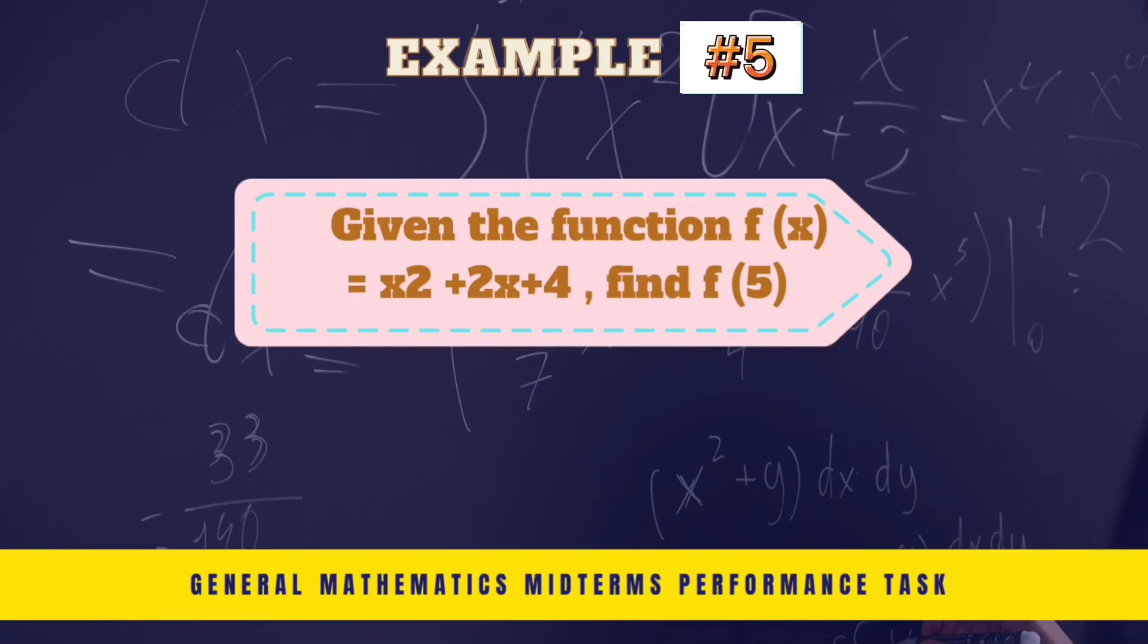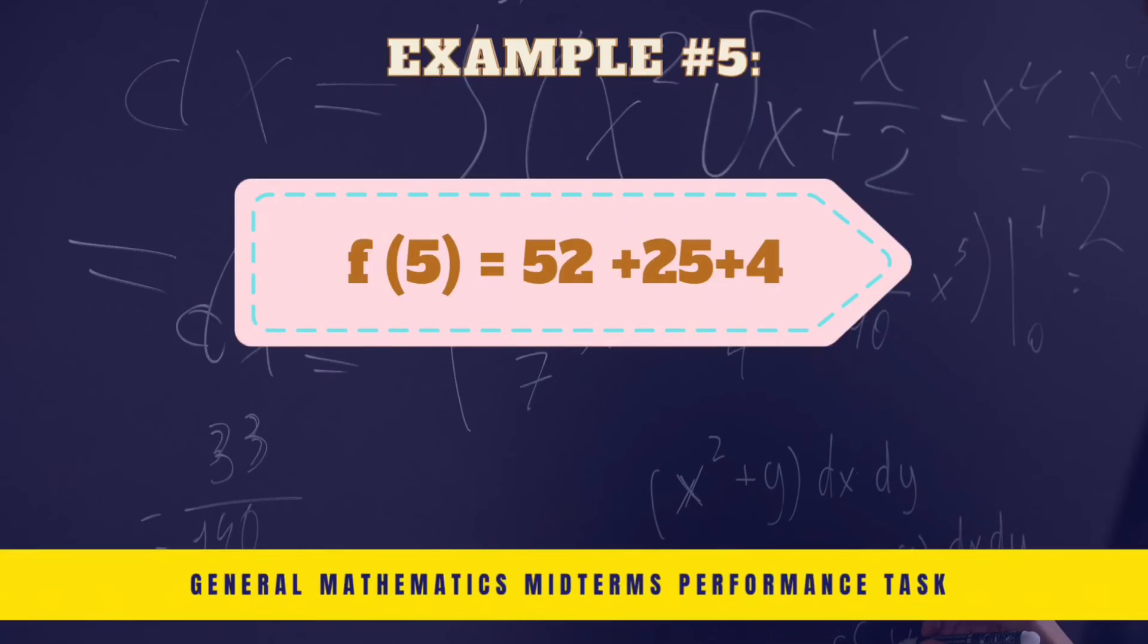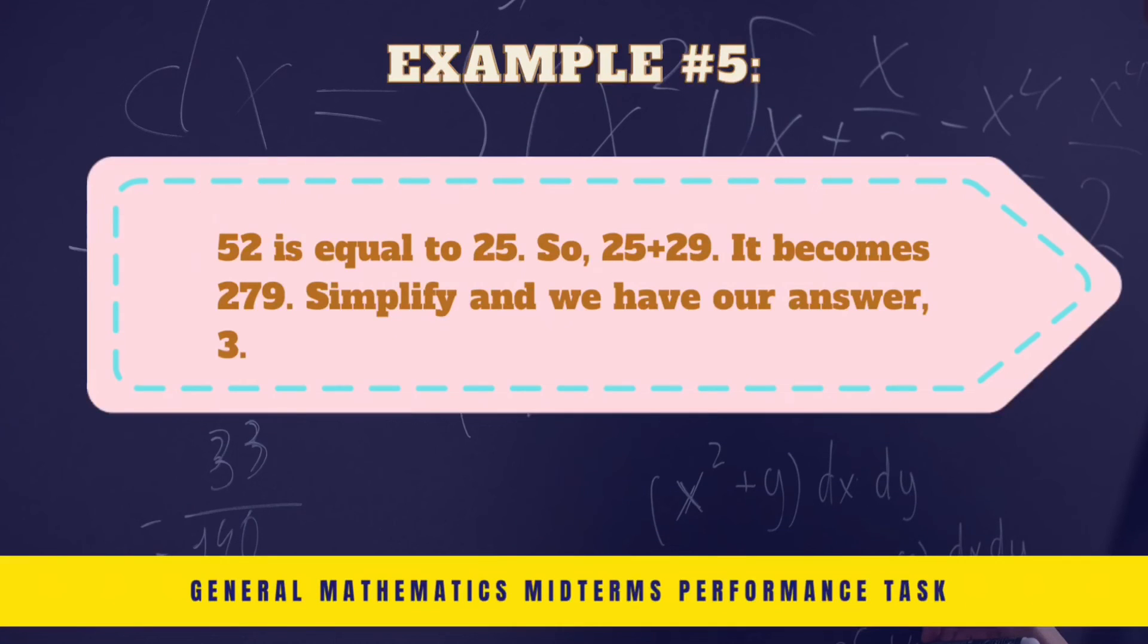Given the function f(x) equals x squared plus 2 over x plus 4, find f(5). f(5) equals 5 squared plus 2 over 5 plus 4. So 25 plus 2 over 9. It becomes 27 over 9. Simplify and we have our answer 3.